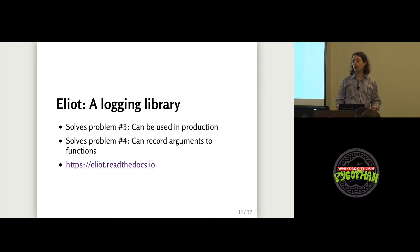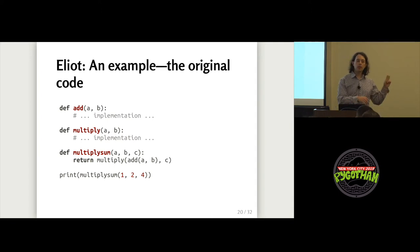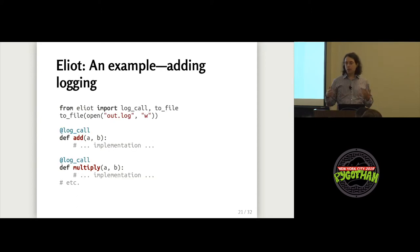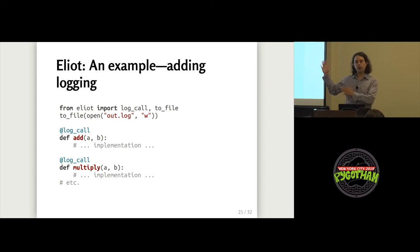I'm talking about Eliot for two reasons: one, I wrote it, so I'm prejudiced and think it's good; second, the way it works is fundamentally different from most logging libraries, so the kind of information it gives you is much more suitable for getting performance information. If you don't want to use it, you can with some work get similar information out of any logging library — for example, the Python standard library logging module. Here's a simple program with a function that adds two numbers, a function that multiplies two numbers, and a multiply_sum function that takes three inputs, adds two of them, then multiplies by the third.